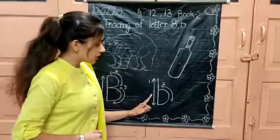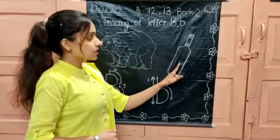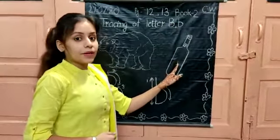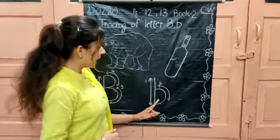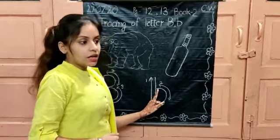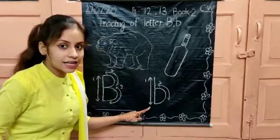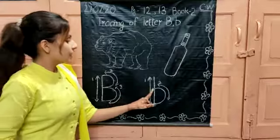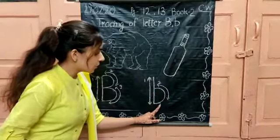Coming to small b — on page number 13, you can see a bed, which you will be colouring. You have to trace small b as well. How will you make it? First of all, you will make a standing line, and then you will make a left open curve. For capital B you made two left open curves, but for small b you only make one left open curve.